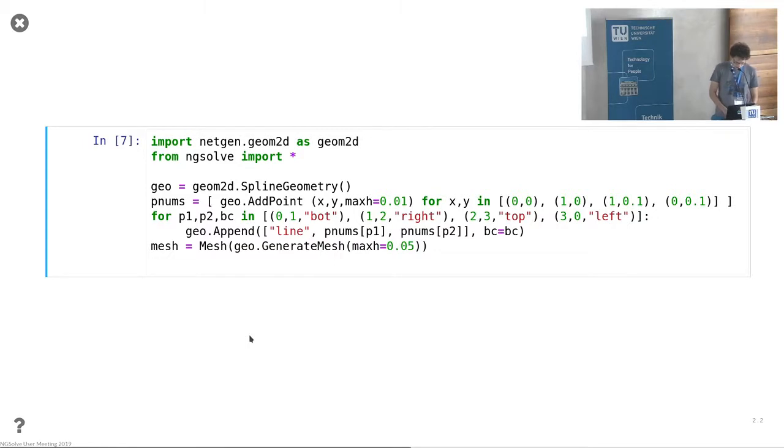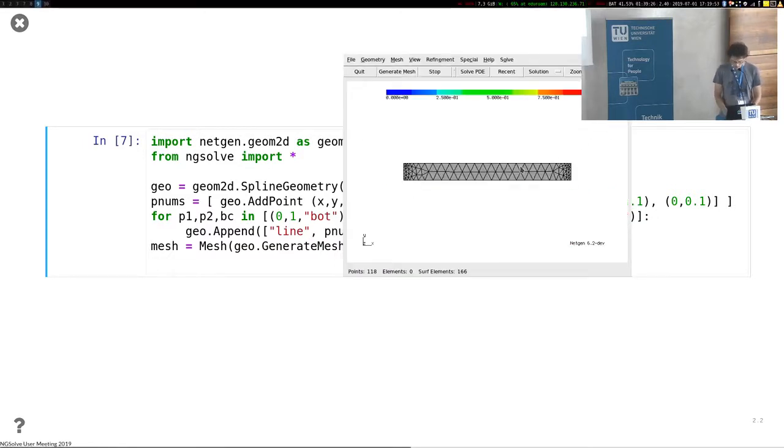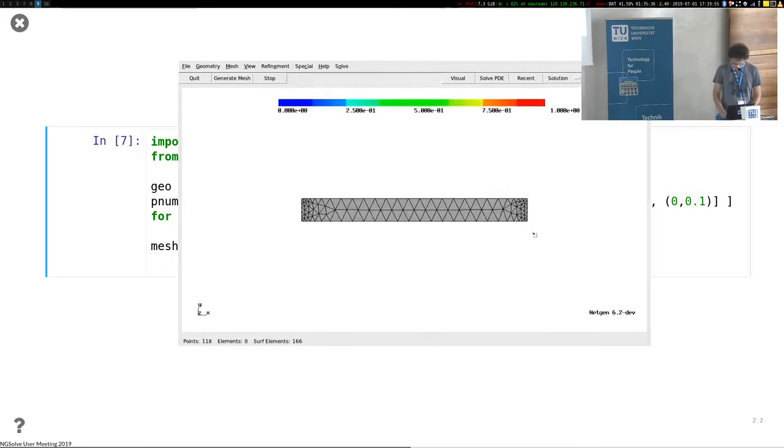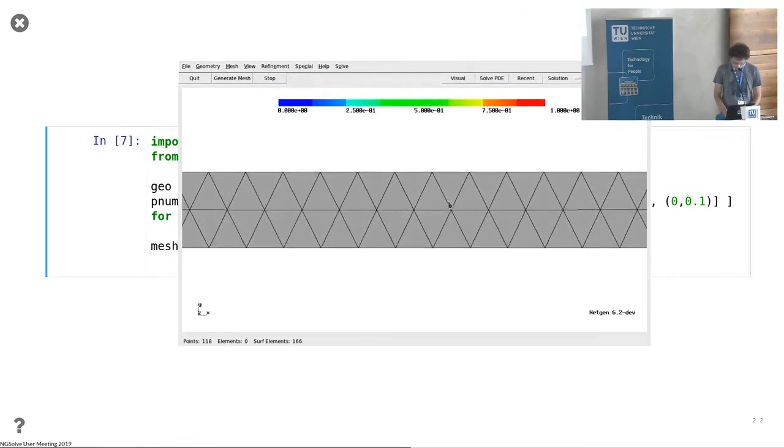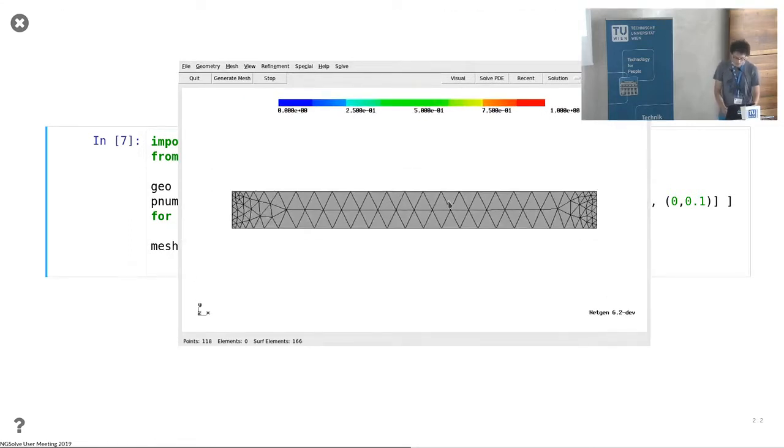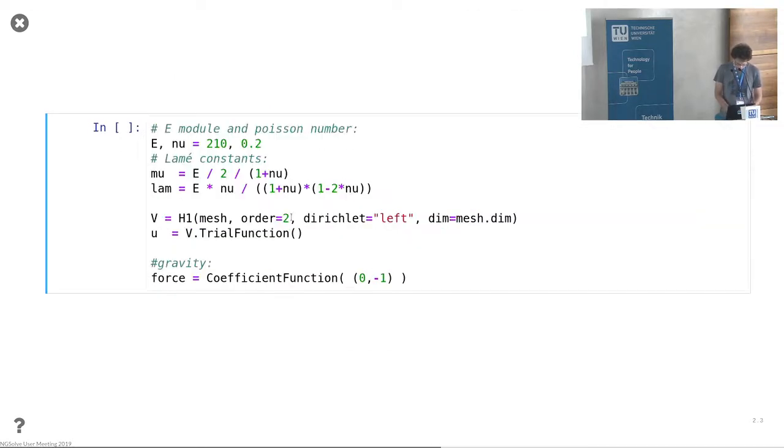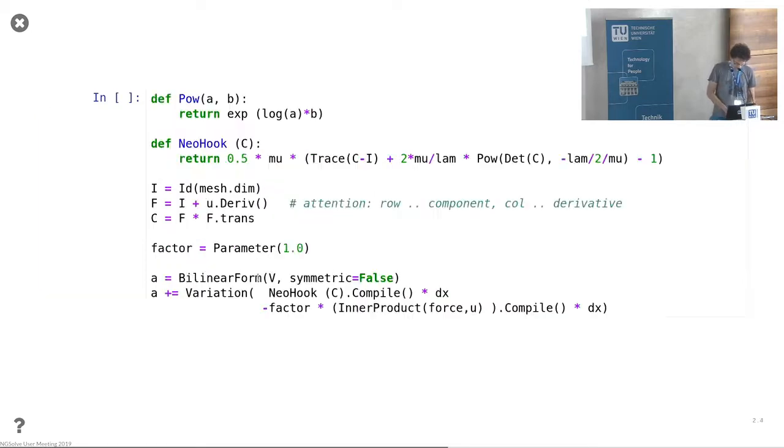We have a nonlinear model for that that we can just put into NGSolve. So we define a geometry - this time it's not the unit square, you might be surprised - this is just a rectangle this time. We fix the boundary conditions on the left side, and we apply some load in the volume. So we redefine some coefficients and the forces as I said, so this is not that fancy.